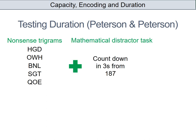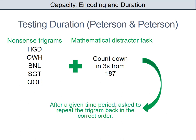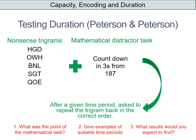Once each trigram was presented individually, the participant had to carry out a mathematical distractor task — for example, count backwards in threes from 187 — for a period of time. After that time period they would need to repeat the trigram back with the three letters in the correct order. So if the initial trigram was QOE, they would do the distractor task and then repeat QOE back. Three things to think about: why was the mathematical task used? What might be suitable time periods? And what results would you expect given what you know about the duration of short-term memory?